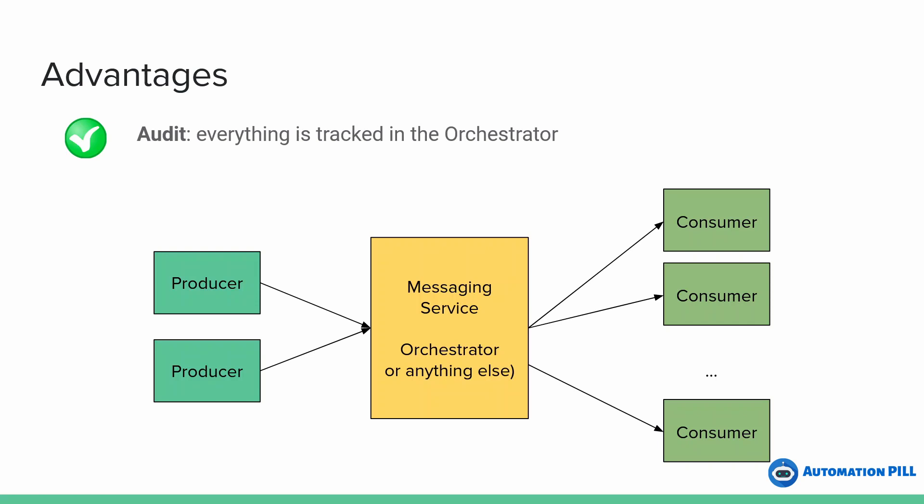Another advantage is the audit. I'm thinking about the commands and messages which are sent. The producer will do the reading part — it will read the necessary PDF invoices, the emails — and it will send the necessary commands in the messaging service that the consumer will retrieve. With this approach, you are separating the reading part, which is in the producer, from the write part, which is in the consumer. That's a big advantage for audit because everything is tracked in the Orchestrator.